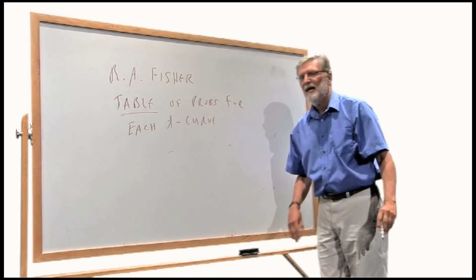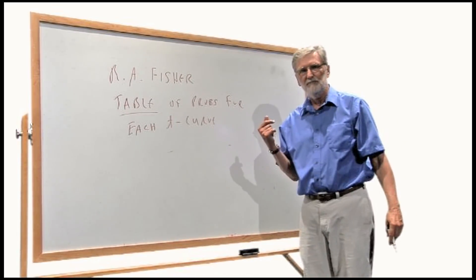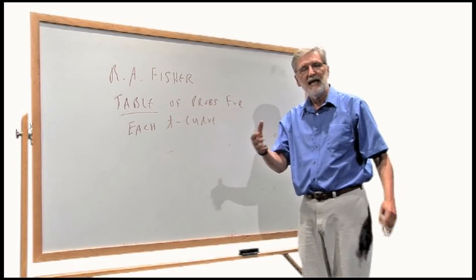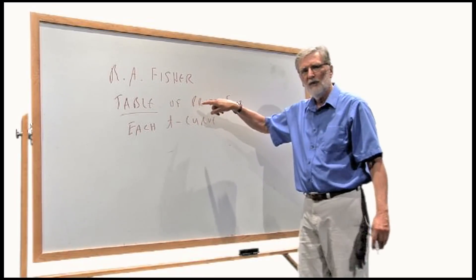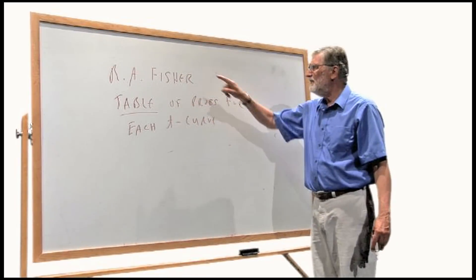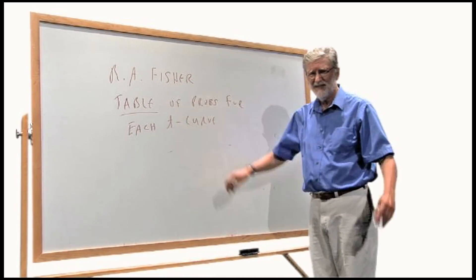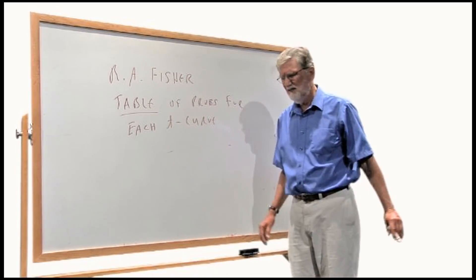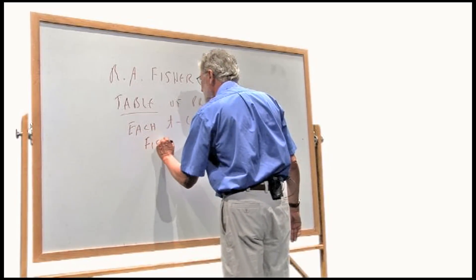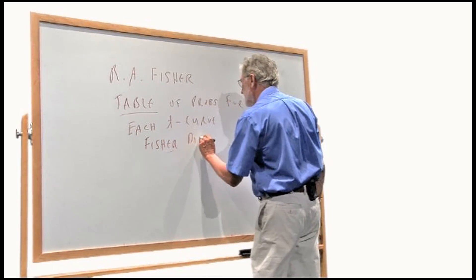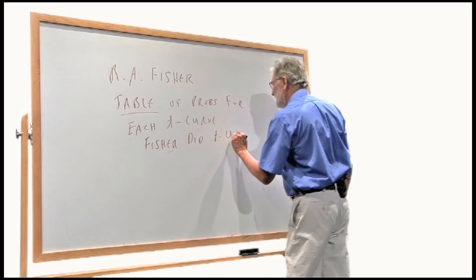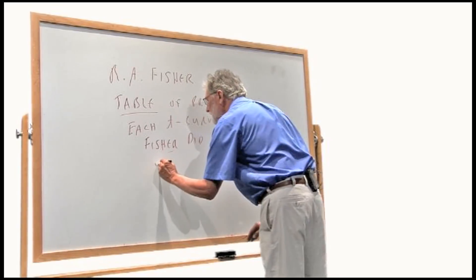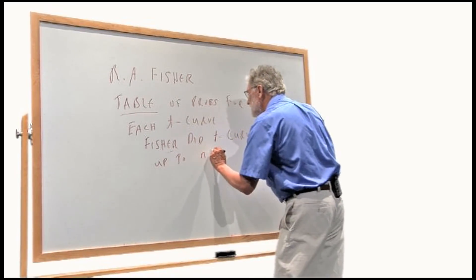You need a T curve for samples of size 8, size 9, size 10, and so on. And this is a lot of work. It's not so much work now because we've got computers, but Fisher was making these T tables back in the 1920s and he was doing a lot of this by hand. It's hard. So Fisher did T curves up to n equals 30.